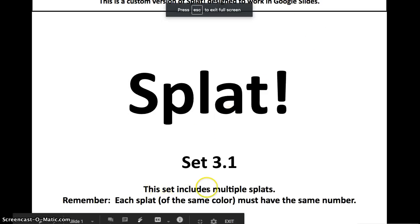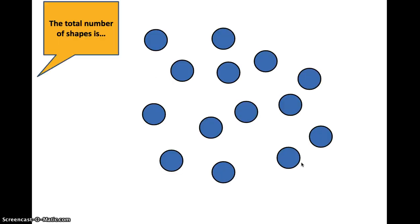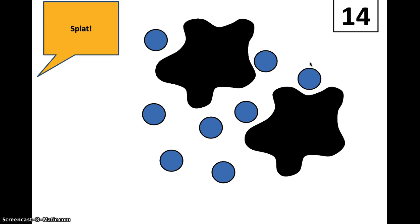And this set includes multiple splats. Remember, each splat of the same color must have the same number. So what does that mean? Again, we start with how many shapes in total. Well, I see 5, 10, and 4 is 14. 14. Splat! But now there's 2 splats. And these are both of the same color, so they must have the same amount underneath each.